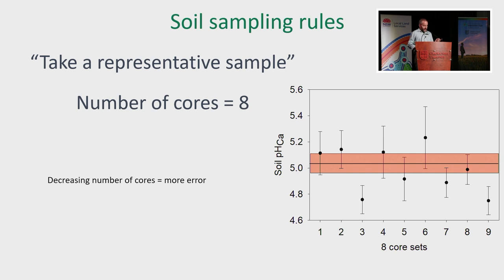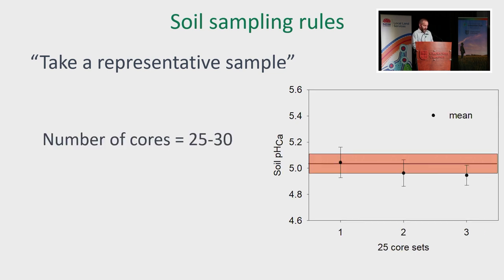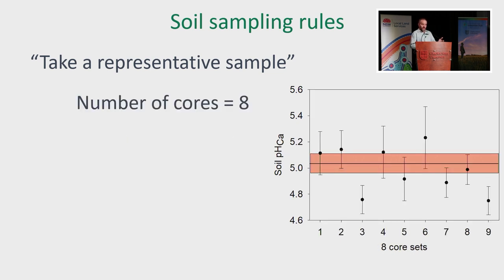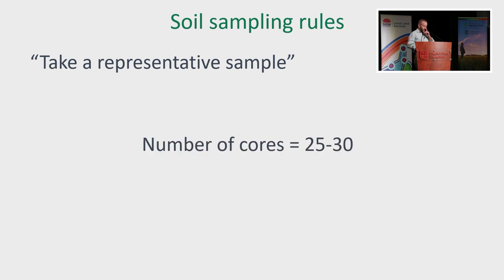Decreasing the number of cores gets you more error. Have a look at the error bars and compare them — with eight cores you've got a lot more error. You can be lucky, but you've got a lot of error as well. That's why we always say: take 25 to 30 cores. If you're going to go to the effort of having someone come and take cores or do it yourself, get that bit done right. When you skimp on it, it just undermines the integrity of what you've done.